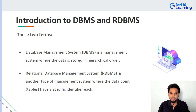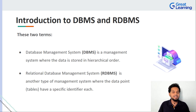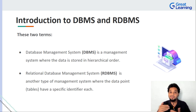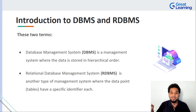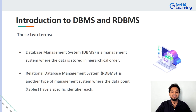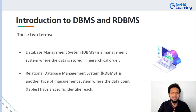In DBMS, data is stored in a hierarchical order, while a relational database management system, or RDBMS, is another type of database management system that gives you the features of a DBMS alongside working with data in a different way. Here, each of the data points — be it columns or tables in a database — have entities or specifiers called keys. You might have heard of primary key, secondary key, and so on.